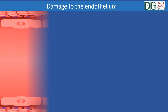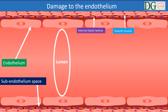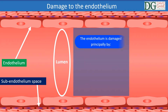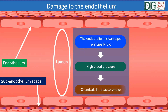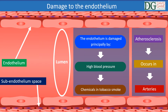The endothelium is the layer of cells lining the lumen of the artery. The endothelium is damaged by a number of risk factors, principally high blood pressure and chemicals in tobacco smoke. Atherosclerosis occurs in arteries rather than veins because in arteries the blood flows fast and at high blood pressure, so damage to the endothelium is more likely and this initiates the inflammatory response.